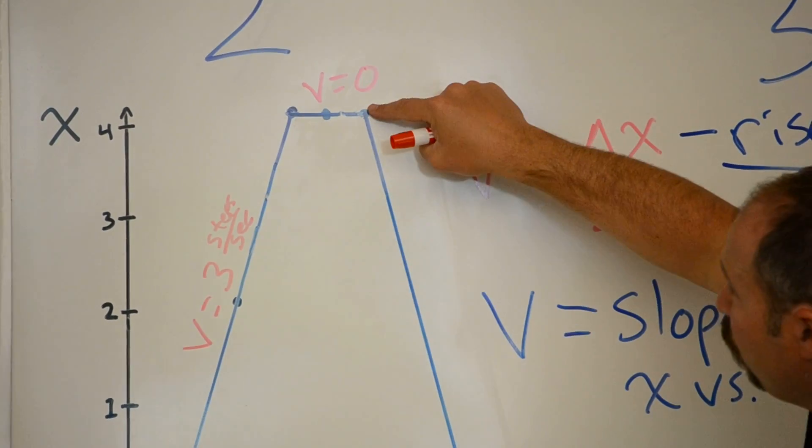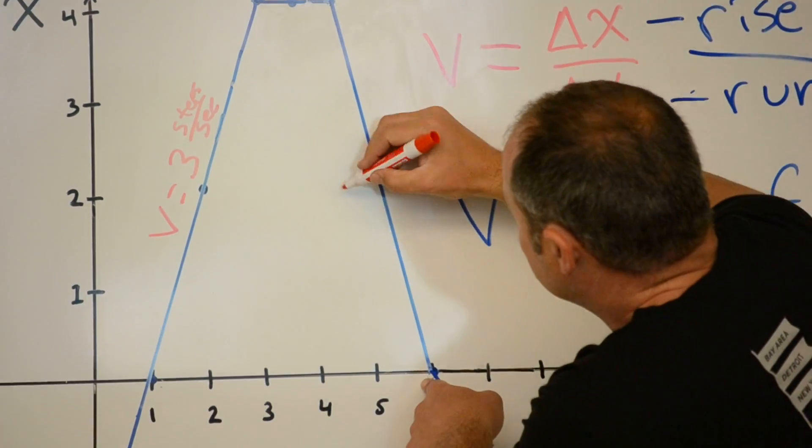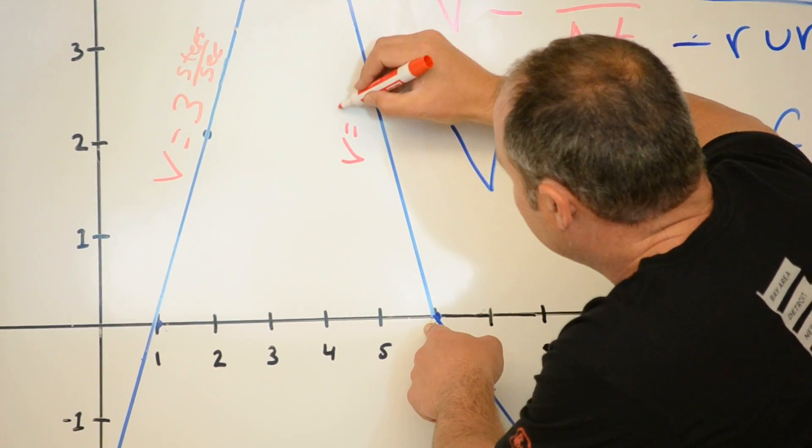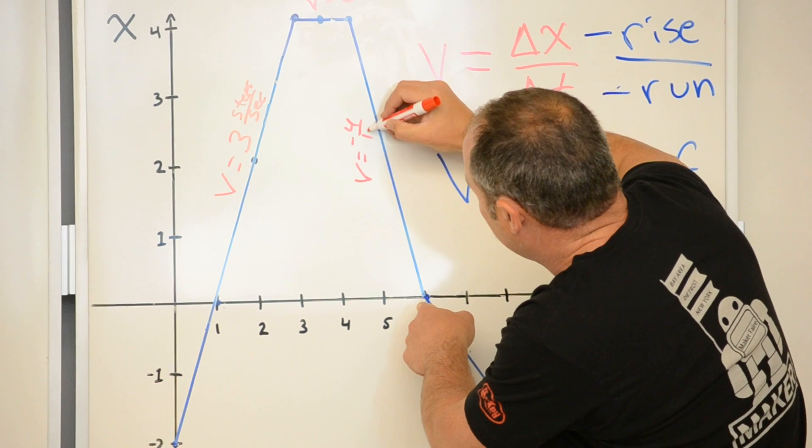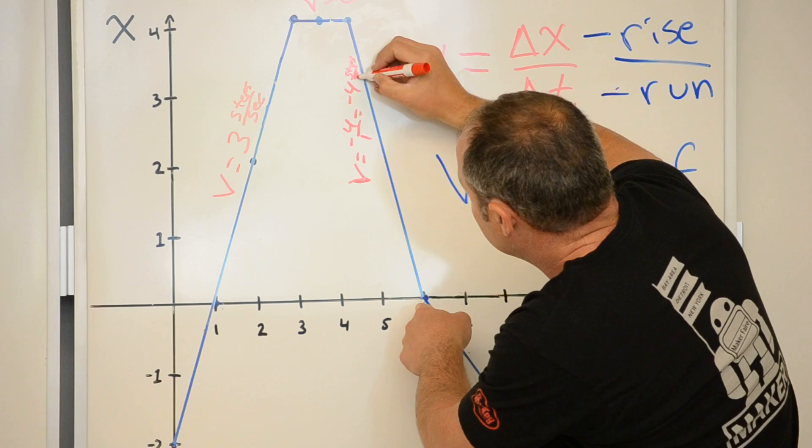Here, in 1 second, I decreased by 4. So, my velocity here is negative 4 over 1 second. That's negative 4 steps per second.